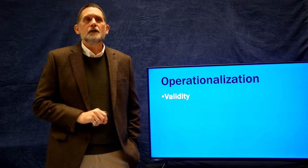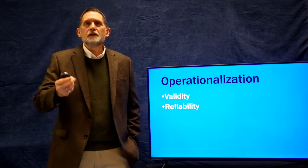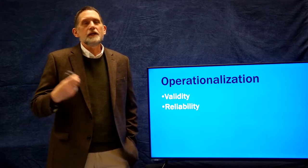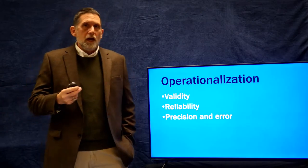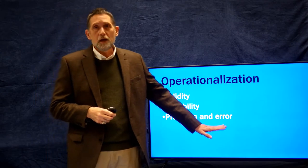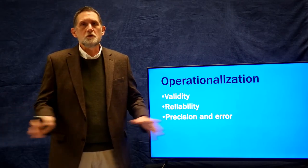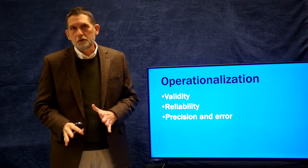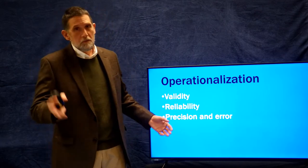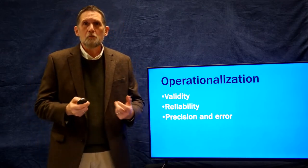Later in the course we'll spend time talking about validity in more detail and how to measure it. We also need a reliable measure, which means that if I take that measurement and then you take it, we come up with the same number — it can be measured again and again reliably. We also have to be concerned about precision and error. All data we collect, all variables and numbers, have error in them. We want to minimize error, or correct for it, and dealing with error and the limits of precision is part of doing statistics.